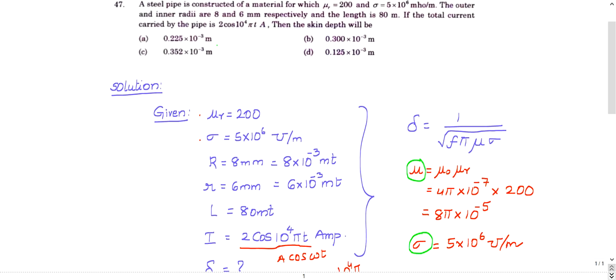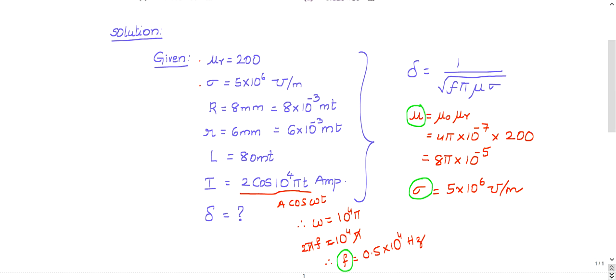See, something is given but what we need, we will pick up from the formula of skin depth. Given data I have written completely here: μr, σ, capital R outer radius, inner radius, length of that pipe, current, and what is the skin depth.